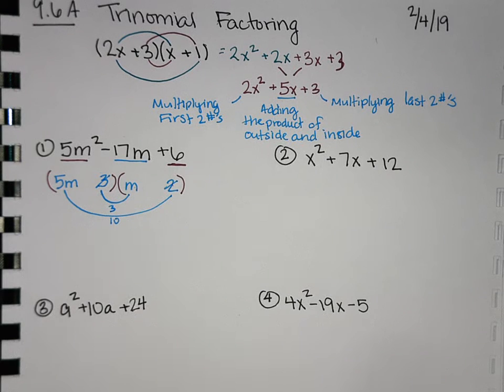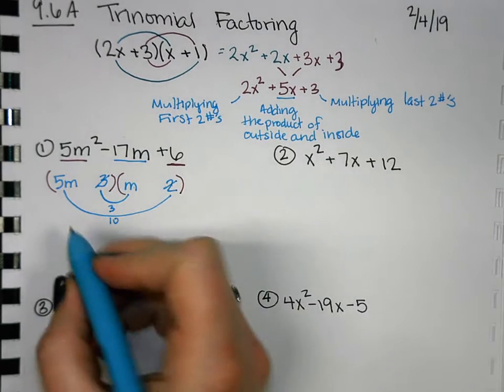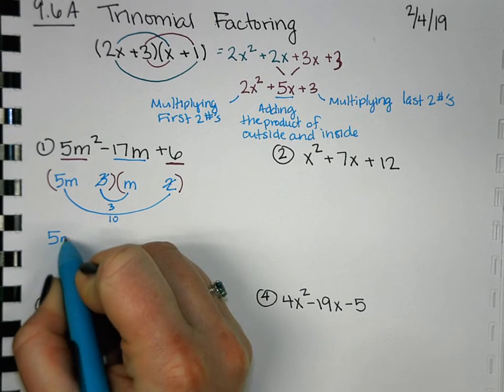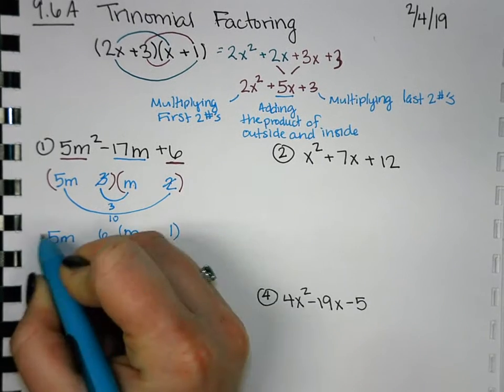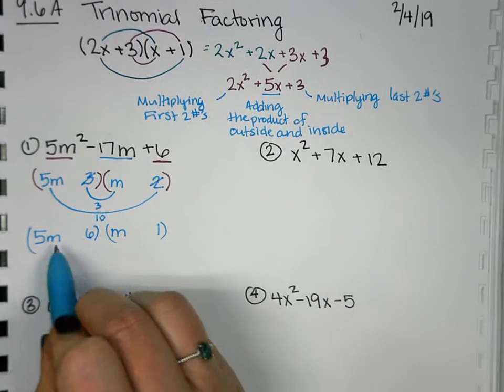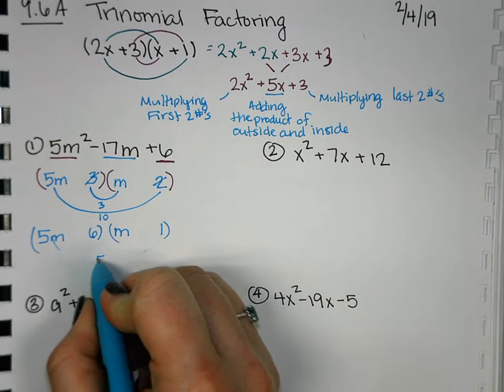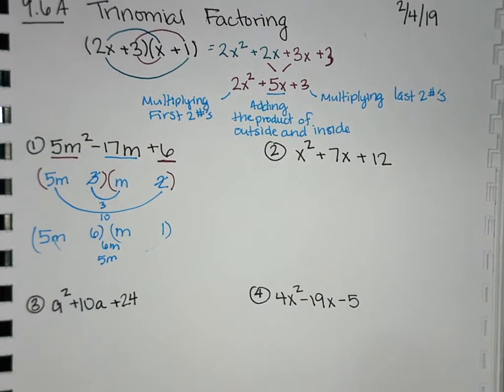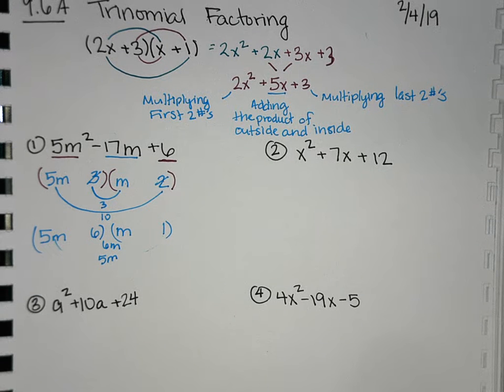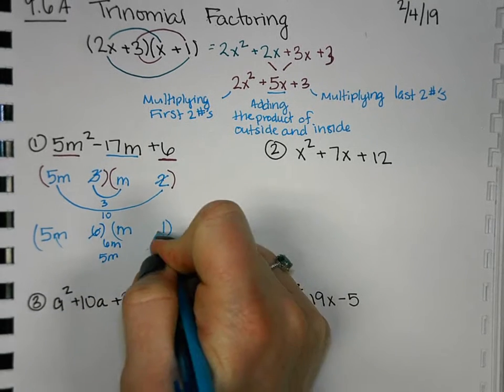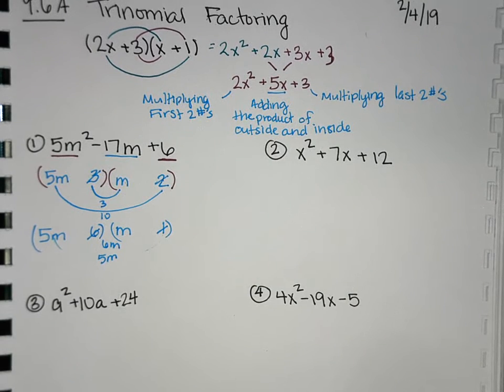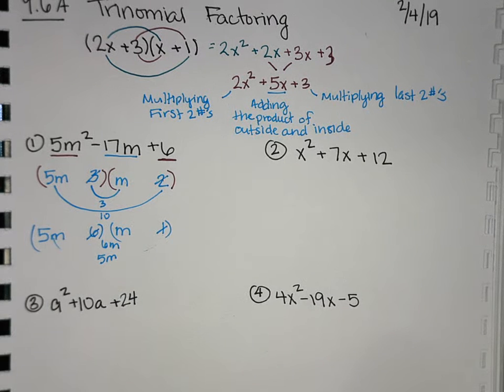Chase? 6 and 1. Okay, so let's try 6 and 1. So 5m, 6m, that's 11m. Did we get to our 17? Not quite. So that one doesn't work. I think we've hit all the factors of 6. But what about putting them in a different order? So what if I switch 3 and 2?